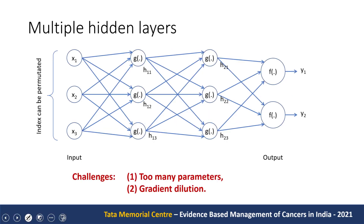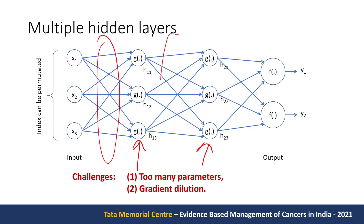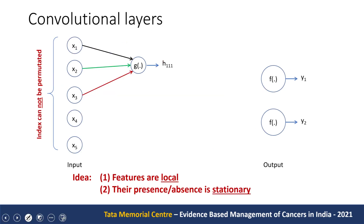If we keep adding more and more layers to the neural network, after some time it stops being useful because we have too many weights — the number keeps increasing, leading to too many parameters to learn. Because of that, we encounter something called gradient dilution. This motivates the use of convolutional neural networks.